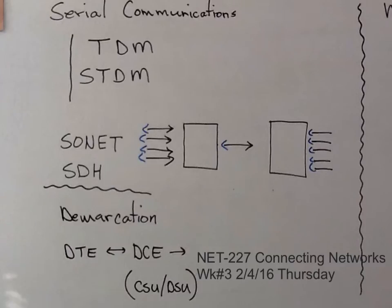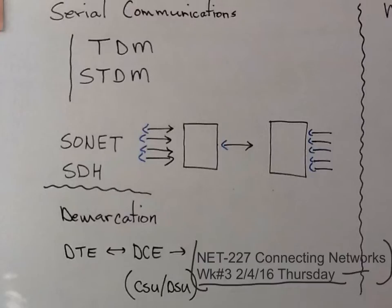This will be a review. We are NET 227, this is week 3 — the week we had the snow, so we only met on Thursday because we didn't have school on Tuesday. We are finishing up some items from point-to-point communications, which would be chapter 3. This first part here will be a little bit of review.